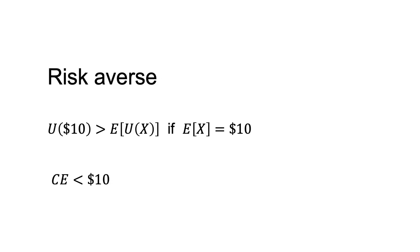Risk aversion. A risk-averse person prefers a sure amount to a gamble with the same expected value. If I strongly prefer $10 for certain to a gamble with an expected value of $10, I am risk-averse. The certainty equivalent of the prospect for this person would be less than $10.